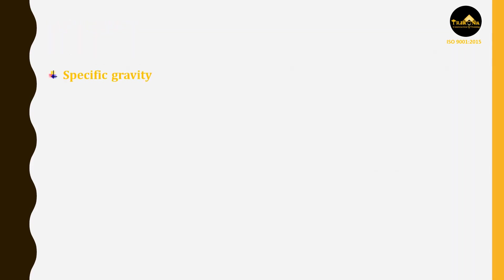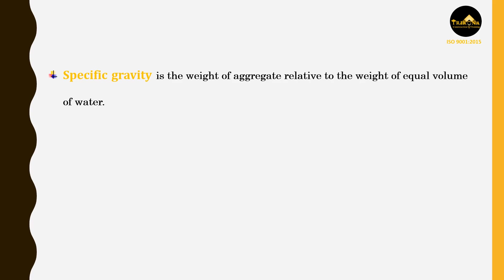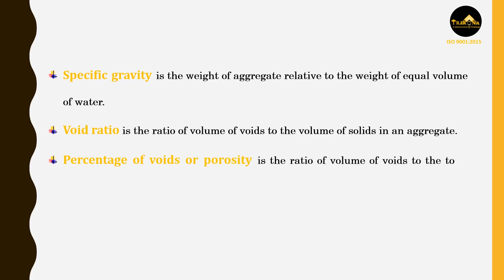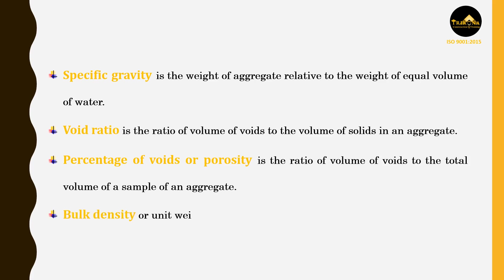Specific gravity is the weight of aggregate relative to the weight of equal volume of water. Void ratio is the ratio of volume of voids to the volume of solids in an aggregate. Percentage of voids, or porosity, is the ratio of volume of voids to the total volume of a sample of an aggregate. Bulk density or unit weight is the weight of material per unit volume.